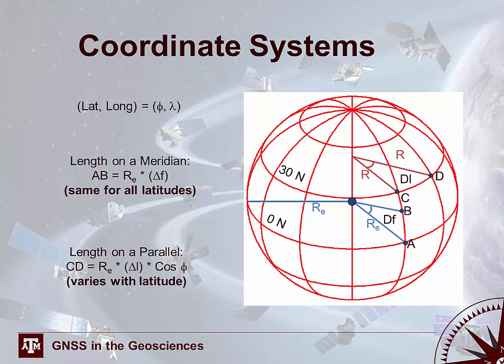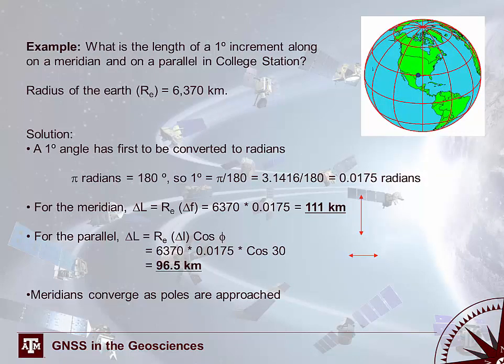The length of a meridian is the same at all latitudes, regardless of whether you are at the equator or at the poles, while the length of a parallel is dependent on the latitude. Higher parallels closer to the north or south pole will be shorter than parallels closer to the equator. Here's an example of how one degree along a meridian and one degree along a parallel at College Station are not the same physical length on the ground. The length of one degree along a meridian in College Station is approximately 111 kilometers, whereas the length of one degree along the parallel at College Station is smaller at only 96.5 kilometers.